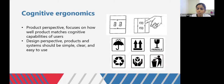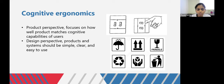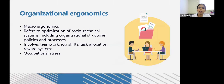From a product perspective, cognitive ergonomics focuses on how well a product matches the cognitive ability of the user. From a design perspective, products and systems should be created to be simple, clear, and easy to use. For example, a vertical light switch makes it obvious that flipping up turns the lights on, whereas making it horizontal creates confusion. Icons are also very useful for quickly conveying information, especially as warning signs.